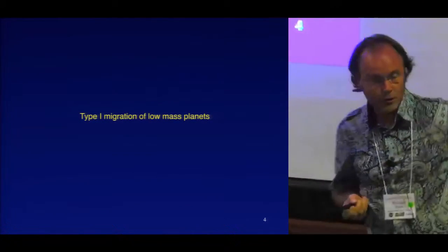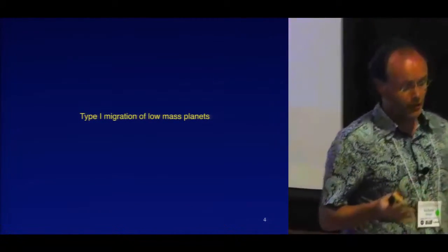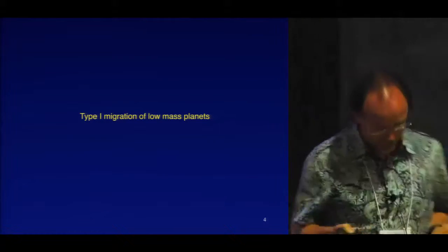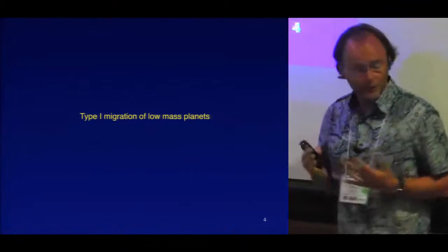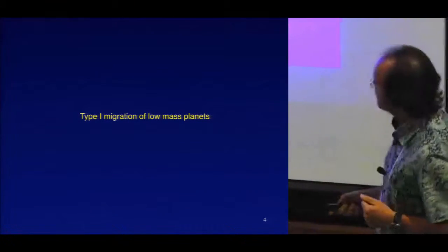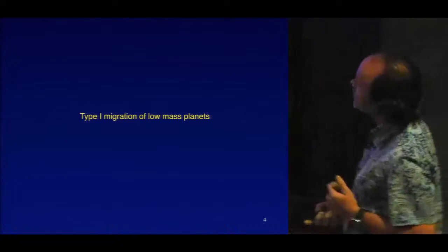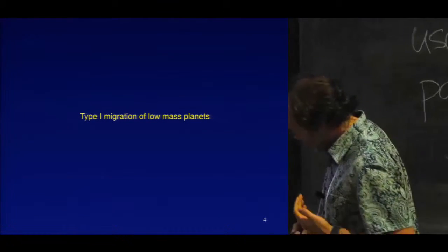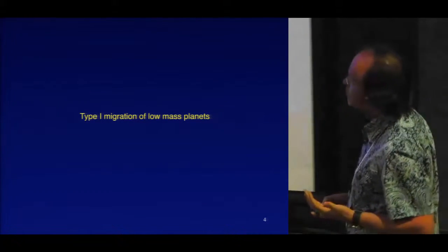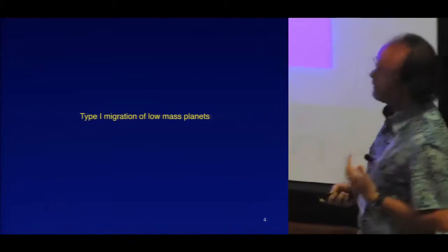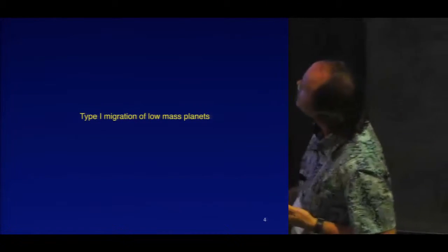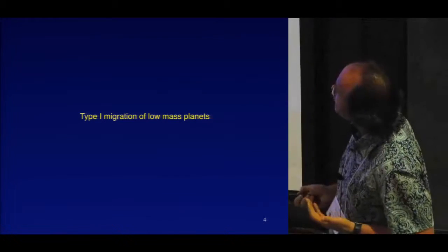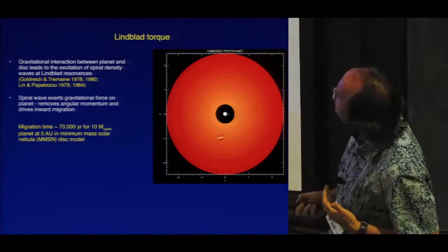Let me now talk about migration of planets, starting off with low-mass planets and then moving on to higher-mass objects. For the migration of low-mass objects, we tend to call that type 1 migration.